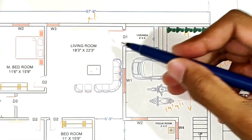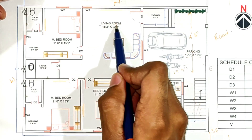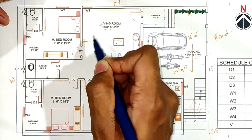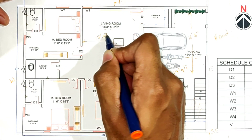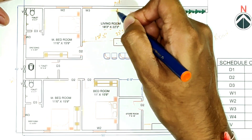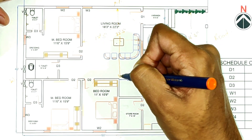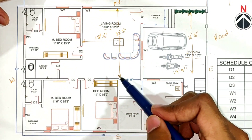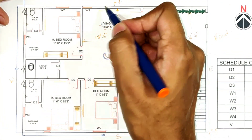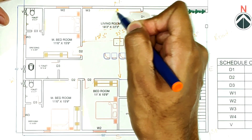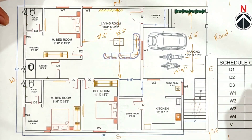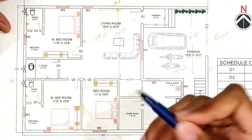The living room size is 18 feet 3 inches by 22 feet 3 inches. This is a complete, spacious living room. It has a TV unit and an L-type sofa set.